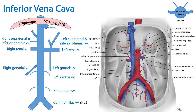So we've discussed the location of the inferior vena cava and its tributaries, with a specific emphasis on the asymmetry between the right and left branches. This is your summary slide. Thank you for your time.